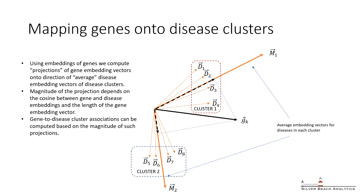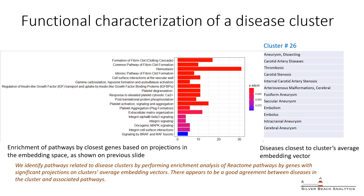Resulting cluster-associated gene sets were characterized using pathways from Reactome. Again, we can see that biologically meaningful results emerge from such analysis. For example, by analyzing genes aligned with cluster number 26, we see that all top pathways are associated with fibrin clot formation and closely related processes. Many diseases in this cluster are related to thrombosis as well as conditions resulting from it, such as embolism and arterial stenosis.